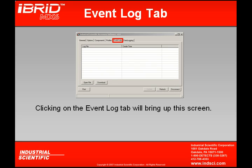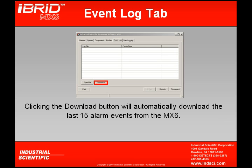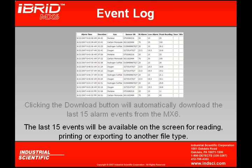My next tab is Event Log. By clicking on the Event Log tab, this screen will appear. By clicking Download, I can download the last 15 alarm events in the MX-6. With this information displayed on my computer, I can then take this information and print it, export it, or save it for later use.